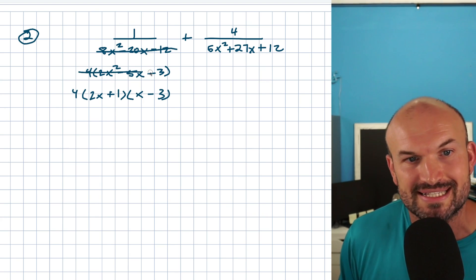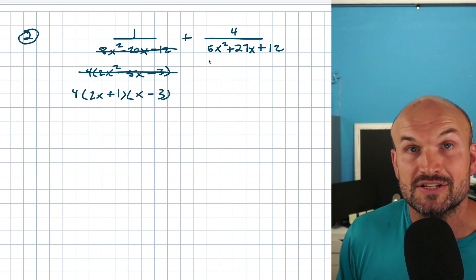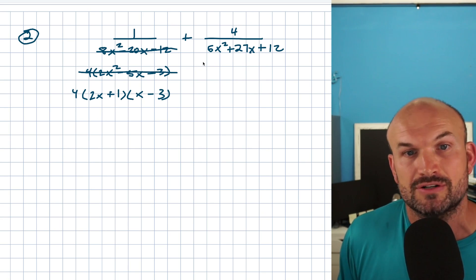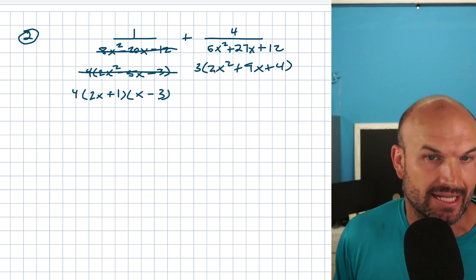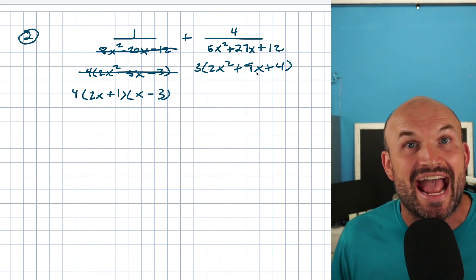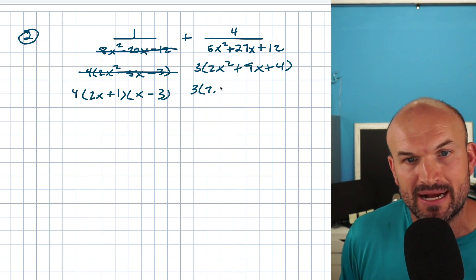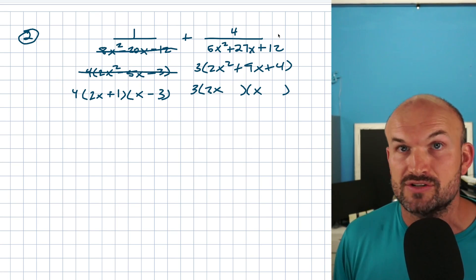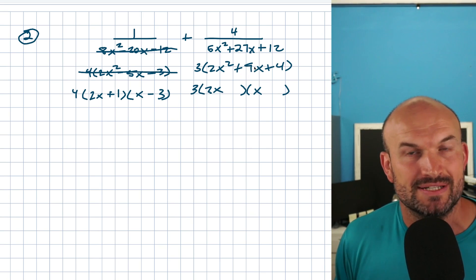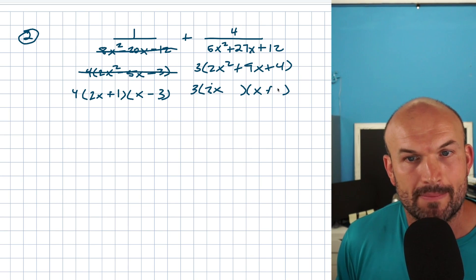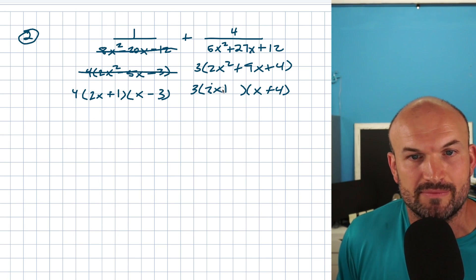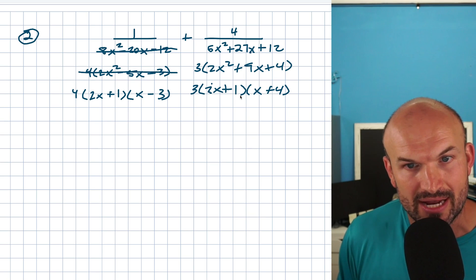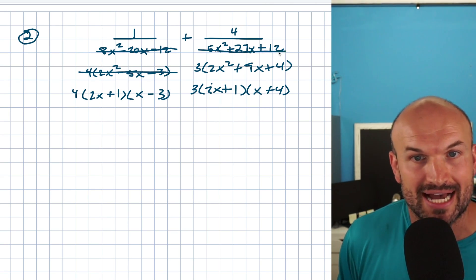Now for the next denominator: these are not all even, but they are all divisible by 3, so first I'll factor out a 3. Now I have another quadratic where a is not equal to 1, but this time my last term is positive, so I'm looking to add my factors — and they'll also be multiplied by 2. The product of two binomials could be (2x)(x). The factors of 4 are 4 and 1, or 2 and 2. I need them to add up to 9: if I multiply 2 times 4 that's 8, and 1 times 1 is 1, giving 8 + 1 = 9. Double checking: 2x times x is 2x², 1 times 4 is 4, and the middle terms — 1 times x is x and 2x times 4 is 8x — add to 9x. So now I have all my factored denominators.